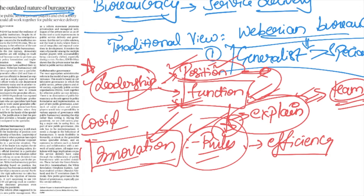So these are the two key points to remember: the traditional view holds generalists at a higher pedestal than specialists, and there are two kinds of leadership. Innovation is not encouraged in our bureaucracy. These are the limitations we have to understand. Now, how did COVID expose the limitations of the traditional bureaucratic model?